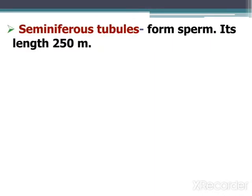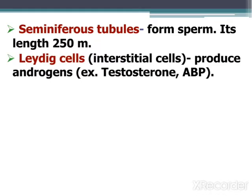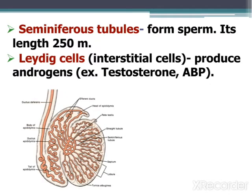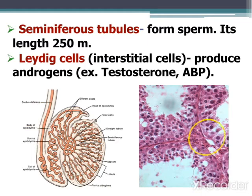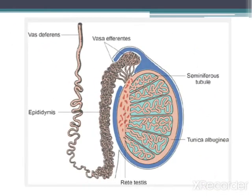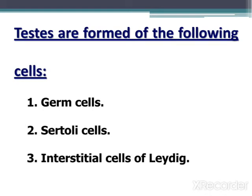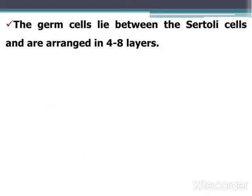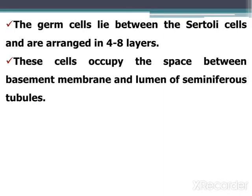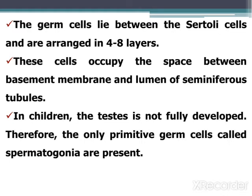Seminiferous tubules form sperm; their total length is about 250 meters. Interstitial cells produce androgen hormones. The seminiferous tubules contain three cell types: germ cells, Sertoli cells, and interstitial cells. The germ cells lie between the Sertoli cells and are arranged in four to eight layers.